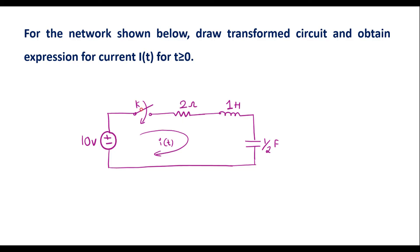We can see that there is a switch, which is closed at t equal to 0. It means that for t less than 0, the switch was open. At that time, current in the circuit is 0, so I(0⁻) is equal to 0. Similarly, voltage across the capacitor before closing the switch, at t less than 0, is also 0 — that is V(0⁻) is equal to 0.